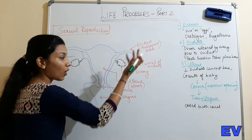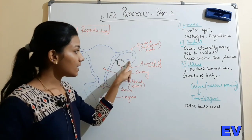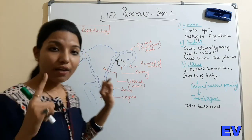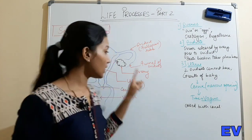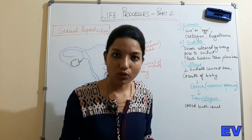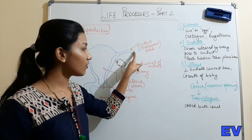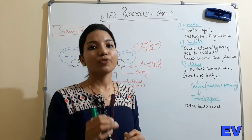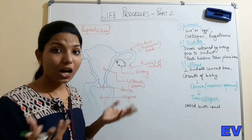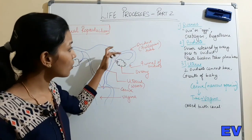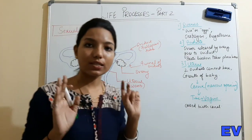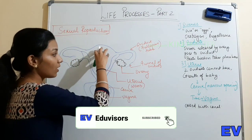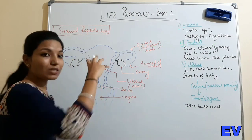The oviduct's function: when the ovum is released, it goes into the oviduct. Fertilization also takes place in the oviduct. Every month, one ovum is released from one of the two ovaries. If sperms arrive within that period, fertilization can happen in the oviduct. Both oviducts meet at the uterus, which is where the embryo grows and the baby develops.